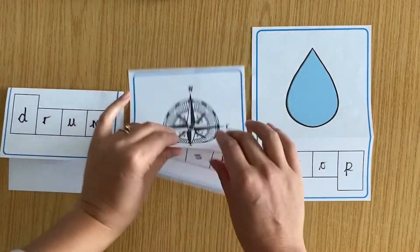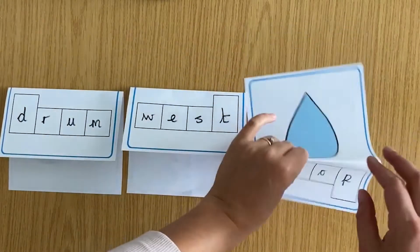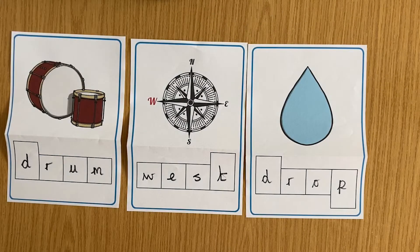You could start by filling in the phoneme frames yourself, folding them over for your child to read and let them reveal the picture to see if they're right.